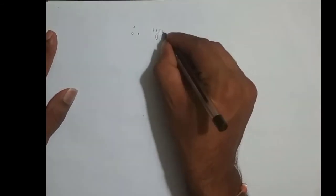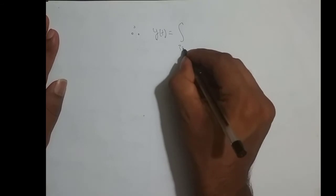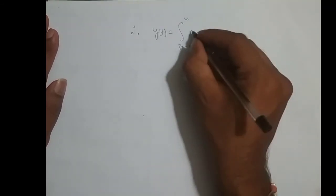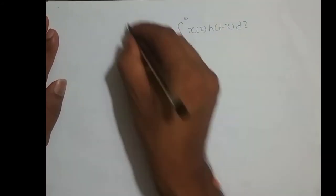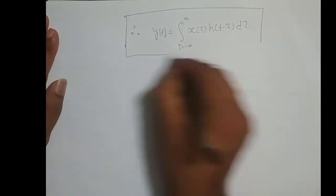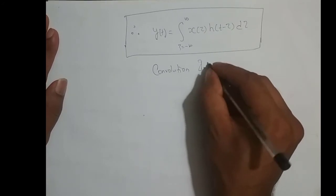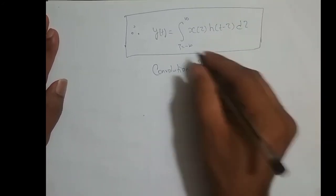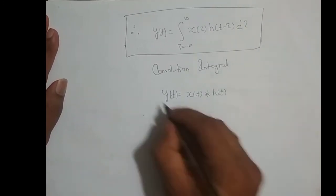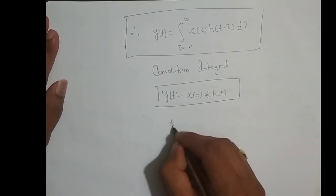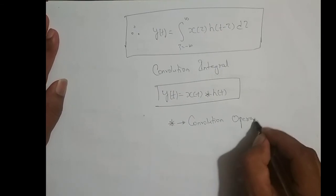Therefore, y(t), the output of a continuous time LTI system, is equal to the integral from tau equals minus infinity to infinity of x(tau) h(t minus tau) d tau. This is the equation for the convolution integral. In compact form, we can write it as y(t) equals x(t) star h(t), where star is the convolution operator.